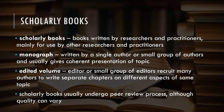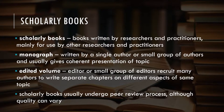Scholarly books are written by researchers and practitioners, mainly for use by other researchers and practitioners. A monograph is written by a single author or small group of authors and usually gives a coherent presentation of a topic, much like an extended review article. Edited volumes have an editor or a small group of editors who recruit many authors to write separate chapters on different aspects of the same topic. It's not unusual for each chapter to take a different perspective, or even for authors to openly disagree with each other. In general, scholarly books undergo a peer review process similar to that used by professional journals.